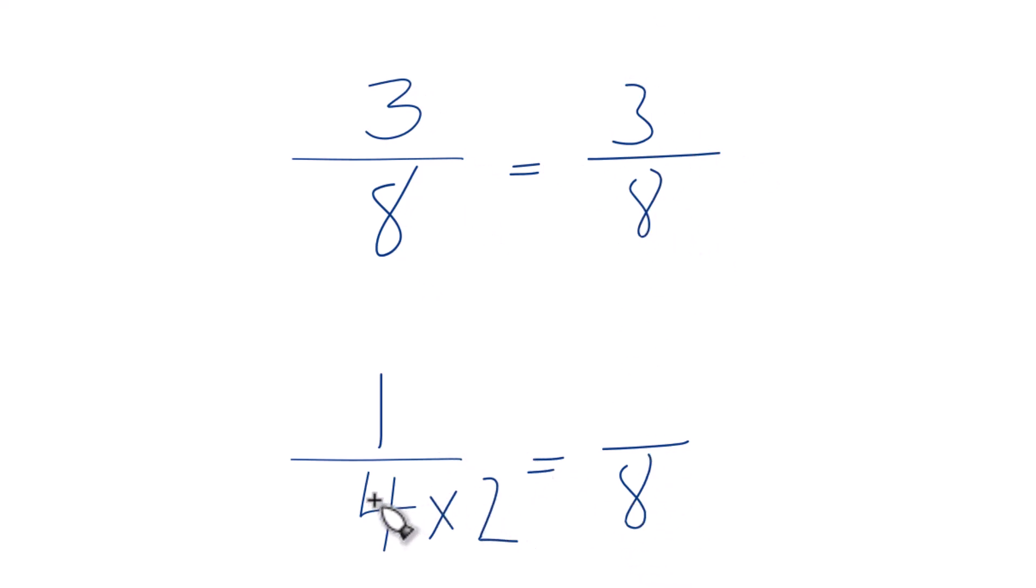But since I multiply the denominator by 2, I do need to multiply the numerator by 2. That's because 2 over 2 is 1. So we're not changing the value just the way it's written. 1 times 2 is 2.